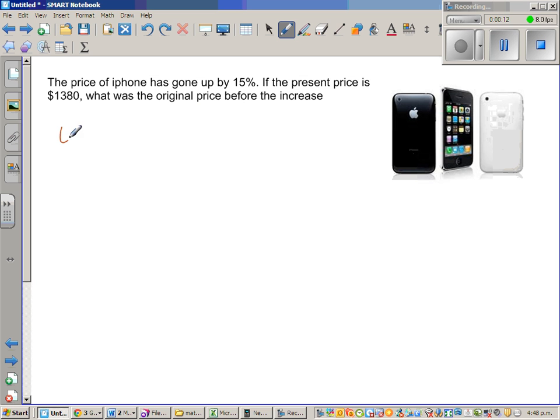So let's say the original price, OP, is P. The present price or the current price is $1,380. And the percentage increase is 15%.